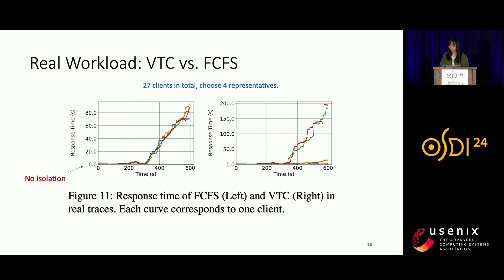On real-world workloads, comparing VTC and FCFS: the x-axis denotes time progression and the y-axis denotes average response time. With 27 clients total, we selected four representatives. Under FCFS, all clients get similar response time, and it keeps growing — meaning they are all backlogged. But two of them have low workloads and should not be delayed. In the VTC figure on the right, it maintains a low response time for the two underloaded clients, so their service is isolated and not affected by aggressive users.